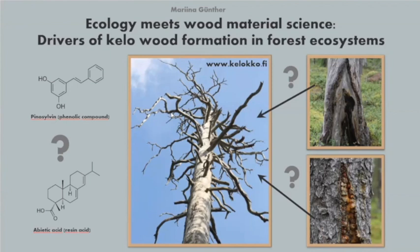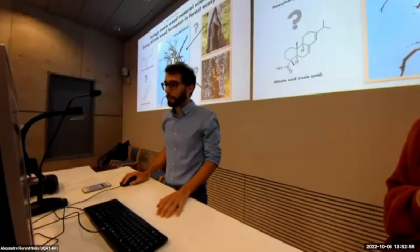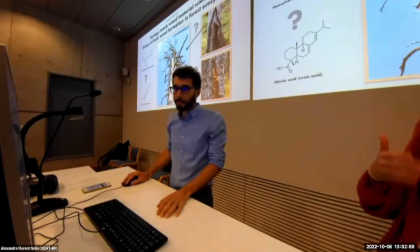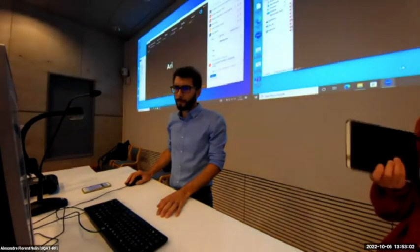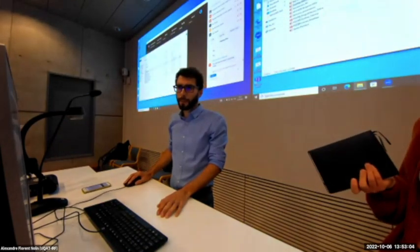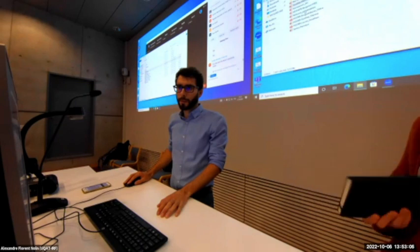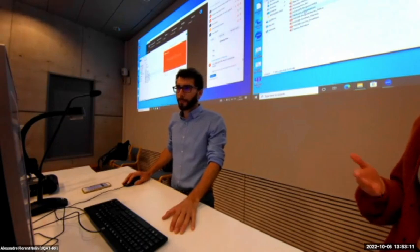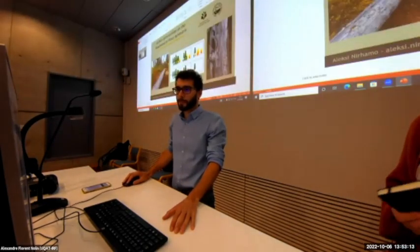Xavier first, and then Ari. How frequent are kello trees in the landscape? I don't remember the exact numbers, but in natural forests — like old growth forests — they can be quite common. So almost half of the dead pines can be silver-colored, so they are not that uncommon. But in managed forests, they are of course not that common.